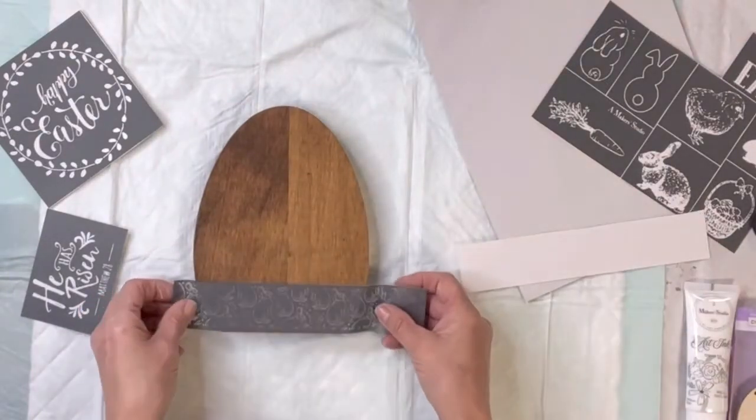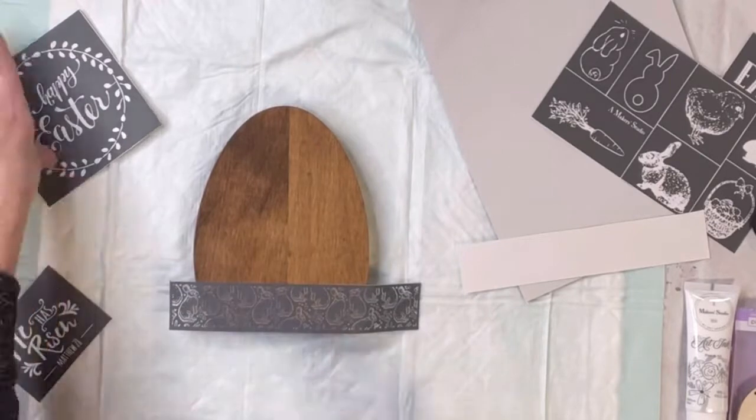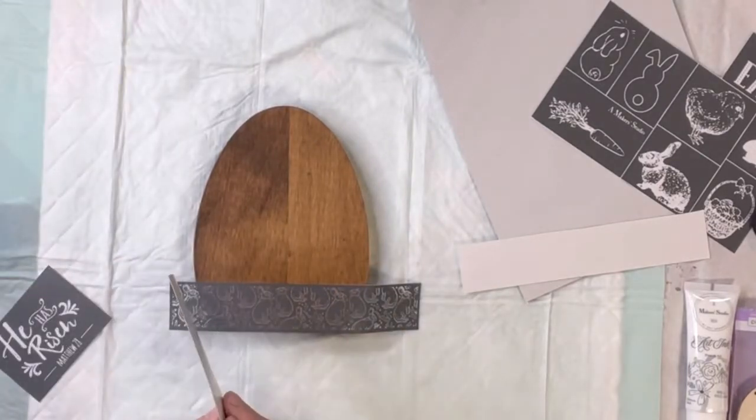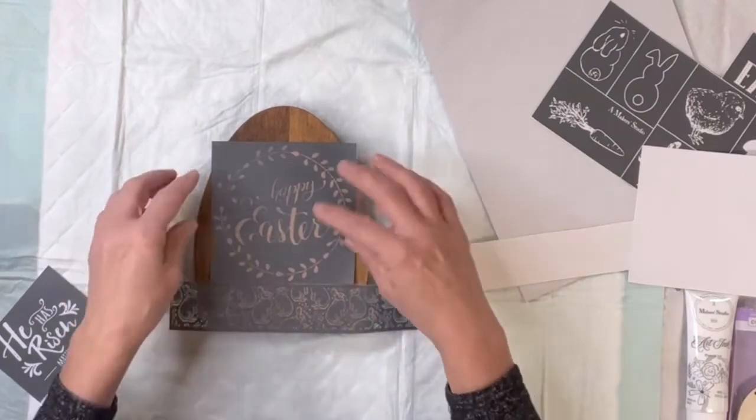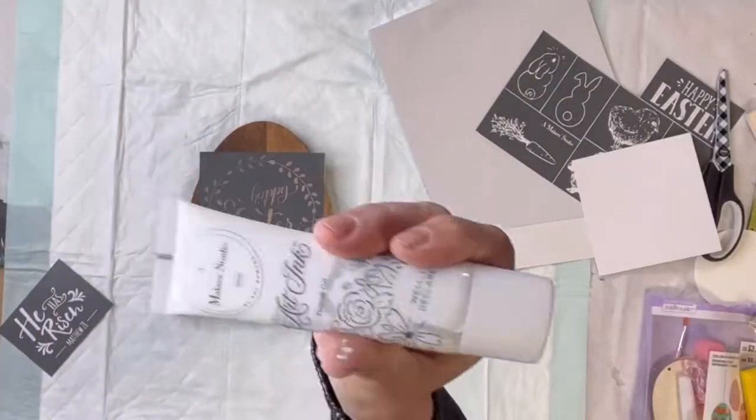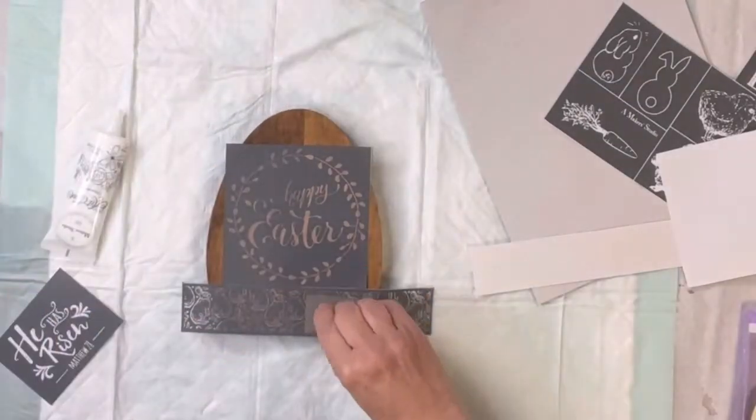I'm going to start by taking this border and putting it at the bottom, and taking the Happy Easter wreath. But I'm not going to be using the Happy Easter out of that.